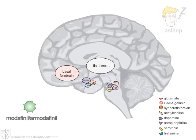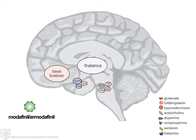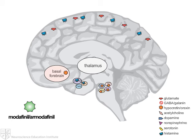Modafinil and its R-enantiomer, armodafinil, are wake-promoting agents. Although their mechanism of action has yet to be clearly elucidated, it is thought to affect many of the neurotransmitter systems of the sleep-wake circuitry, including hypocretin-orexin, histamine, glutamate, dopamine, and GABA.